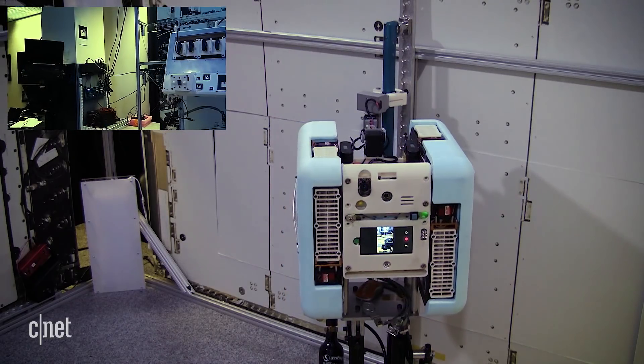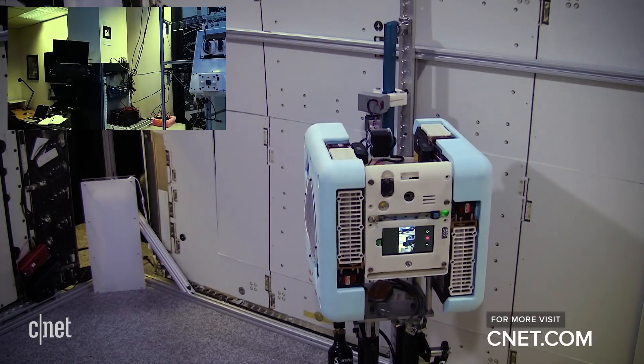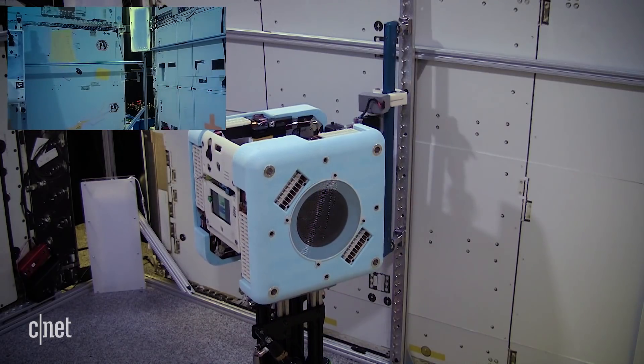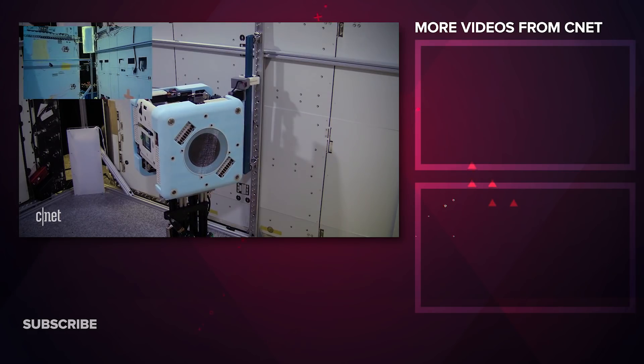As it turns out, astronauts spend a lot of time repositioning cameras, taking measurements and samples all around the space station, and looking for things. These are all things that a robot can do all by itself and save astronauts a lot of time.